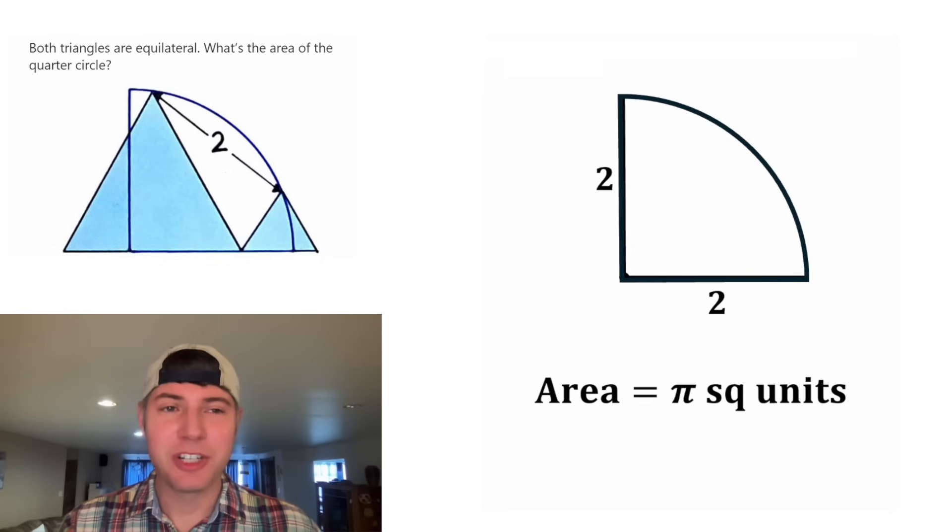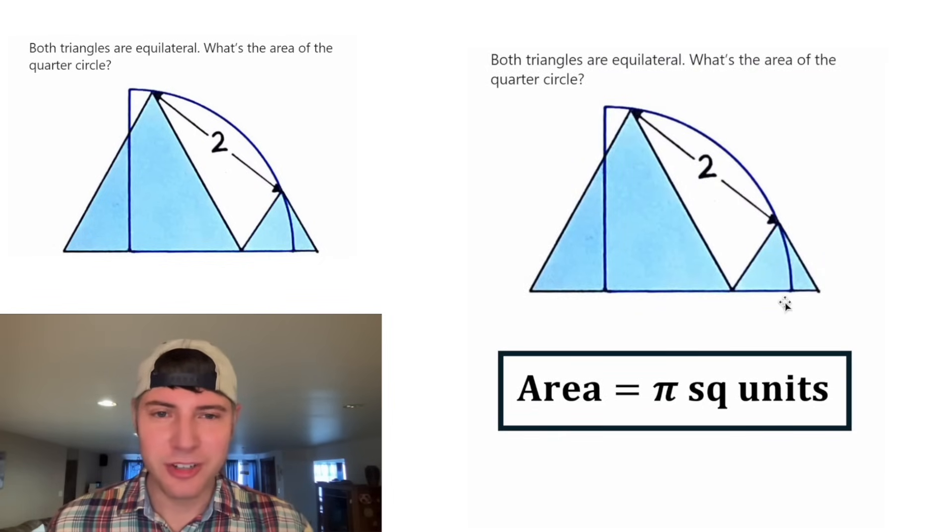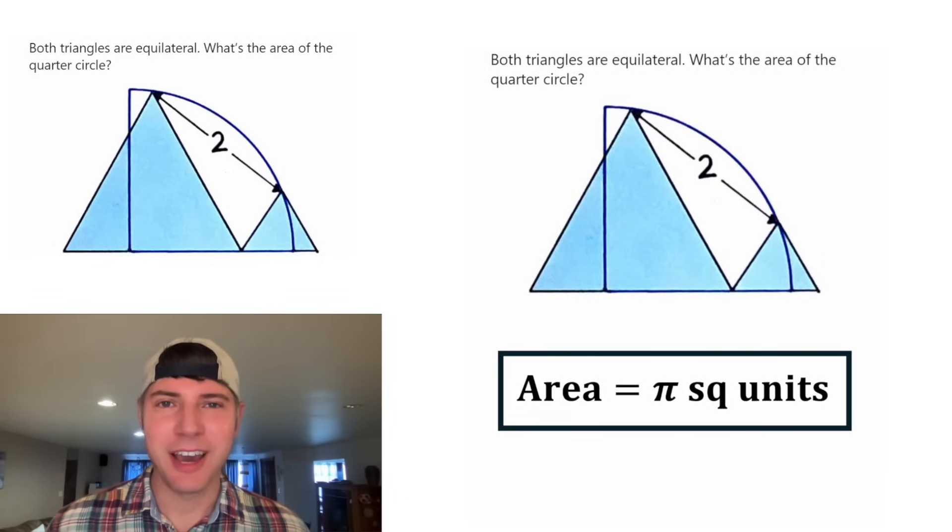And this is the answer to our question. Let's put a box around it. The area of this quarter circle is equal to pi square units. How exciting. Thank you.